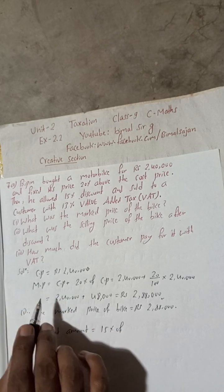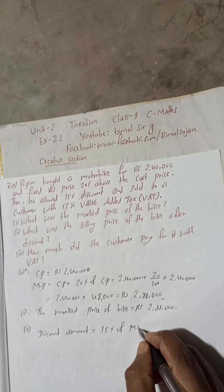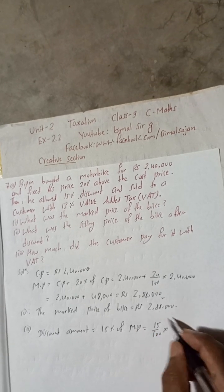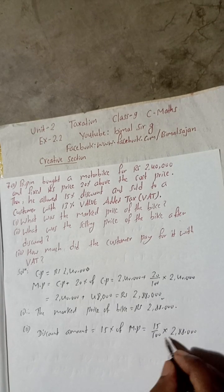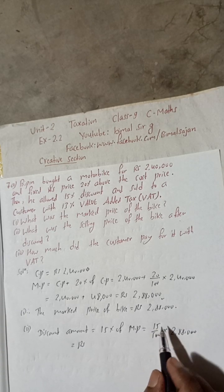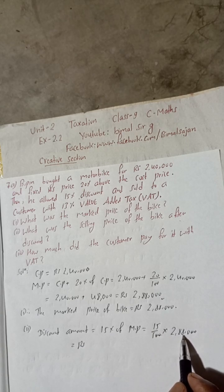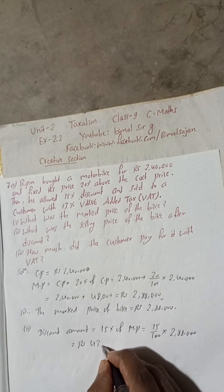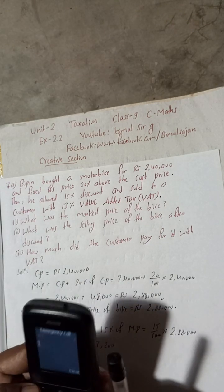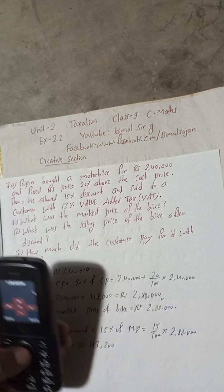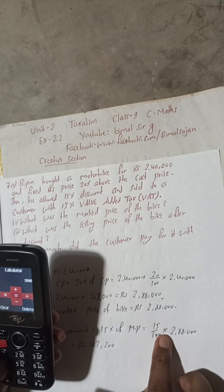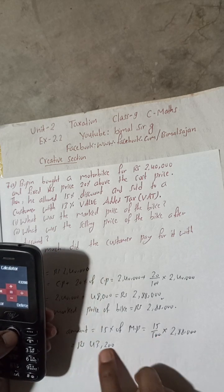Discount is given on the marked price. So discount amount equals 15 percent of MP, which is 15 divided by 100 into 2,88,000. Cancelling the zeros and multiplying 15 by 2,880 gives us Rs 43,200. Let me confirm: 2,880 into 15 equals 43,200. Yes, correct.